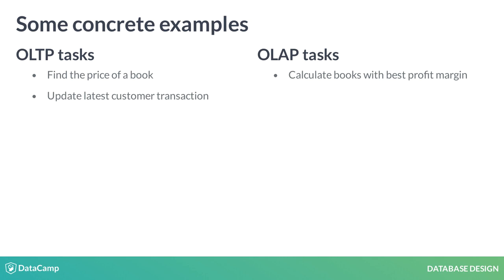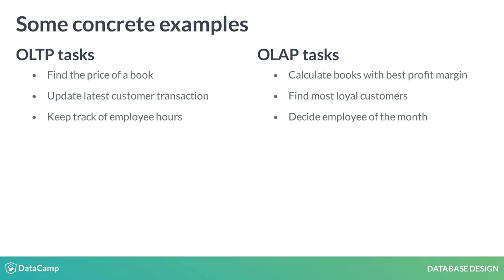However, if you wanted to do sophisticated analysis on sales, like most loyal customers, you would use OLAP. An OLTP database would be used to track when employees have worked, while to run an analysis on who deserves employee of the month, you would need to switch over to OLAP. OLTP focuses on supporting day-to-day operations, while OLAP tasks are vaguer and focus on business decision-making.